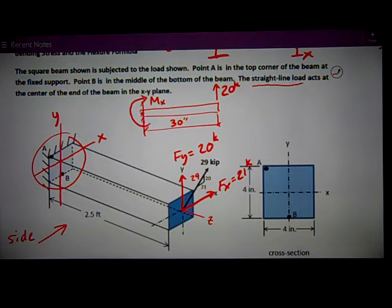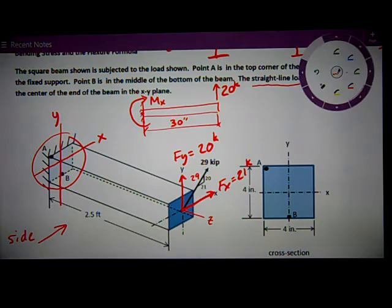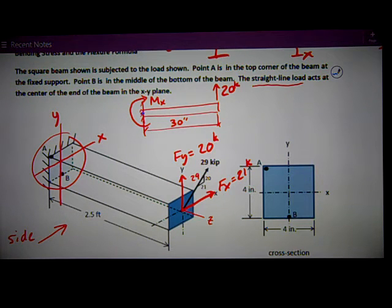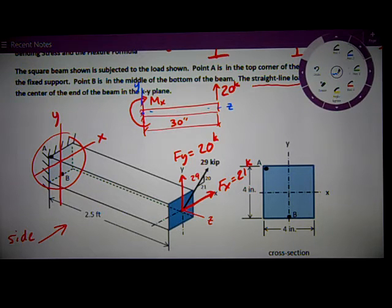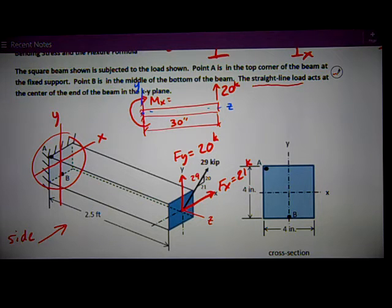This is an X-axis moment. The Y-axis is going up. The Z-axis is going down the length of it. So MX is just equal to force times perpendicular distance. The force is 20 kips, the distance is 30 inches. So I get 600 inch kips.